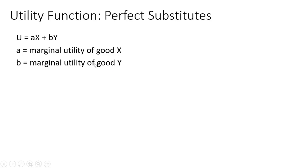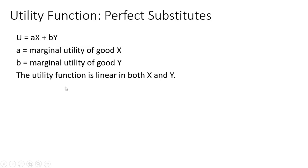If you're using calculus, these will just be their respective partial derivatives. The partial derivative of the utility function with respect to x will just give the value in front of x. Likewise, the partial derivative with respect to y will give the value in front of y — in this case, b. The utility function is linear in both x and y. That is a property of perfect substitutes.